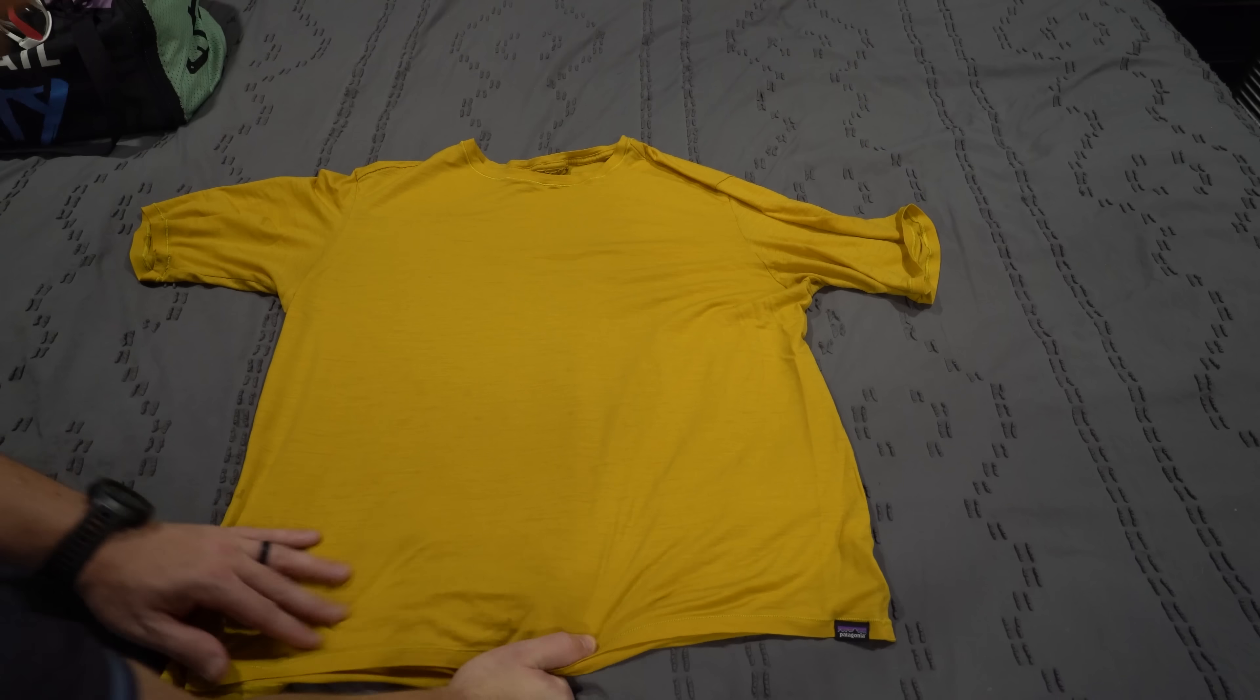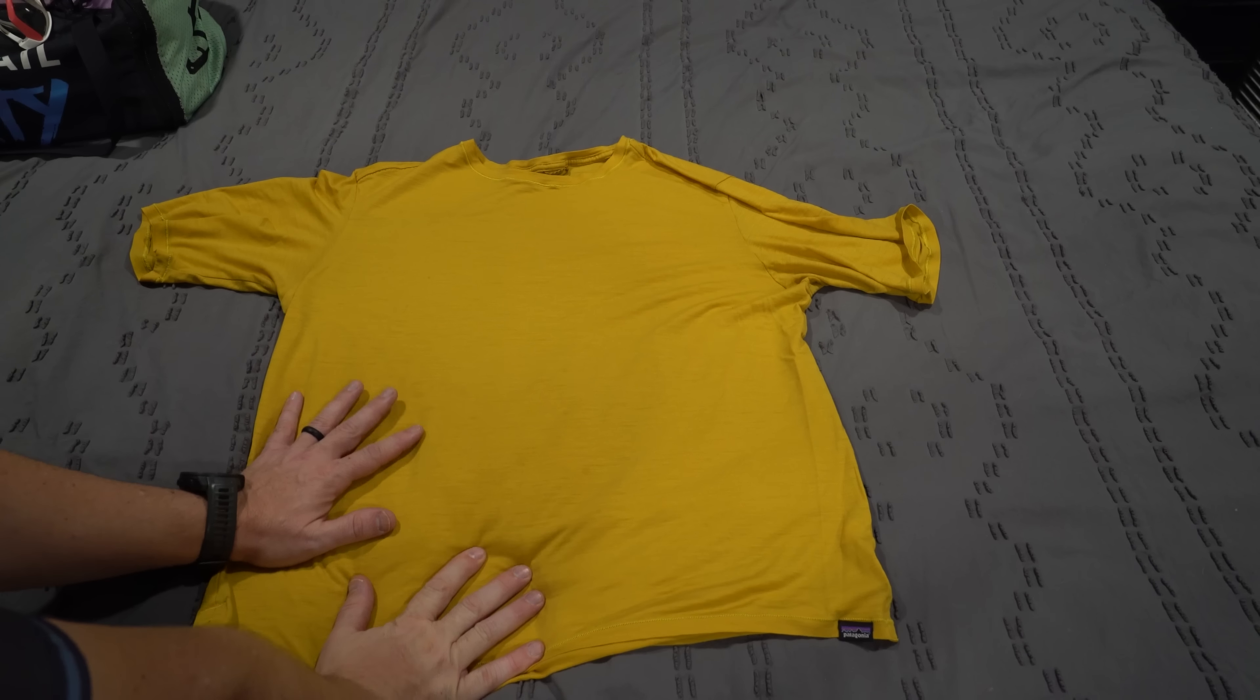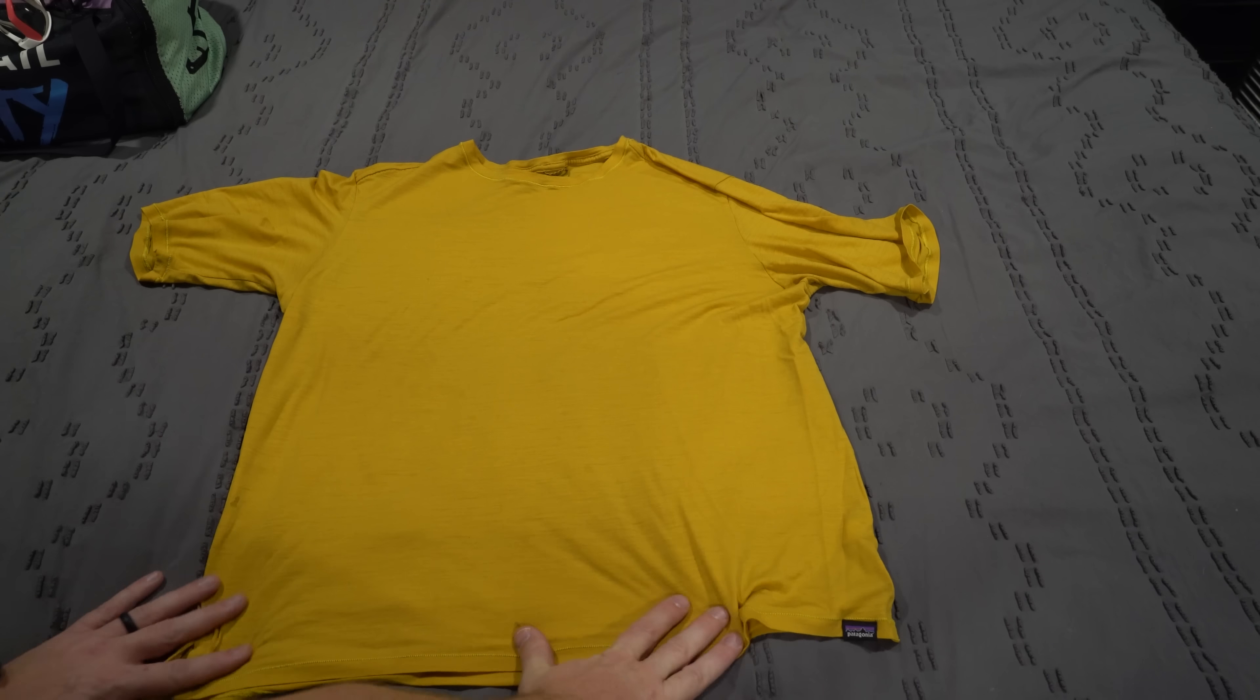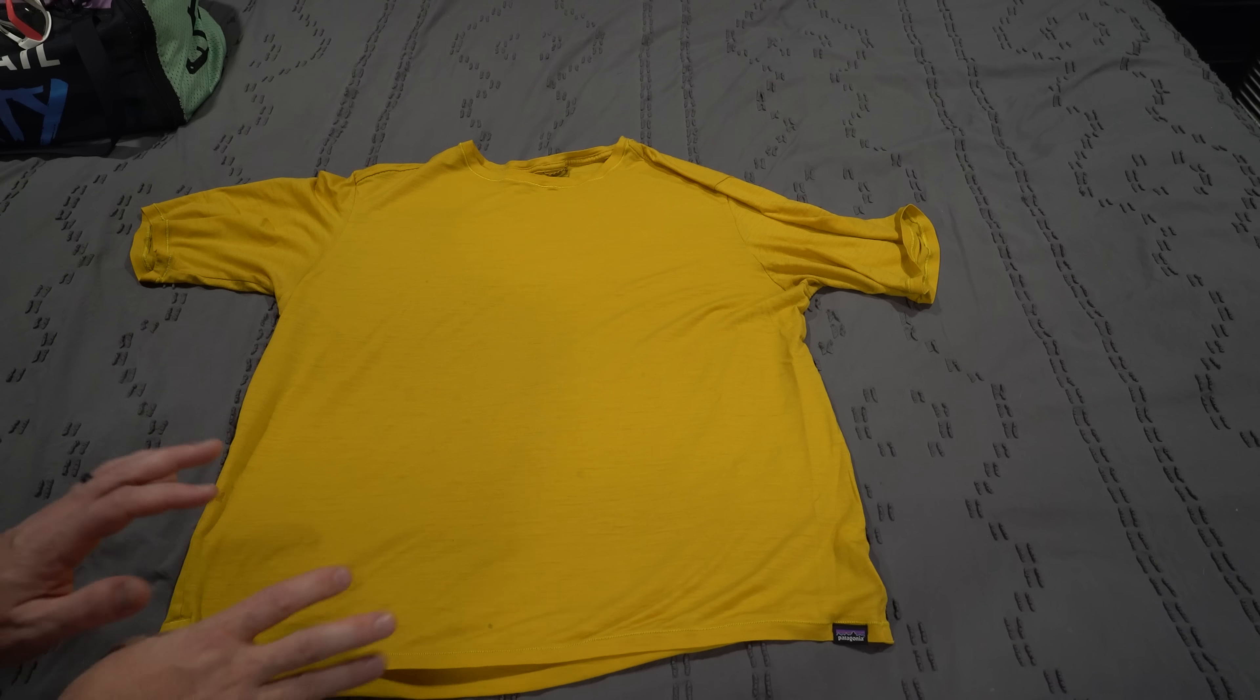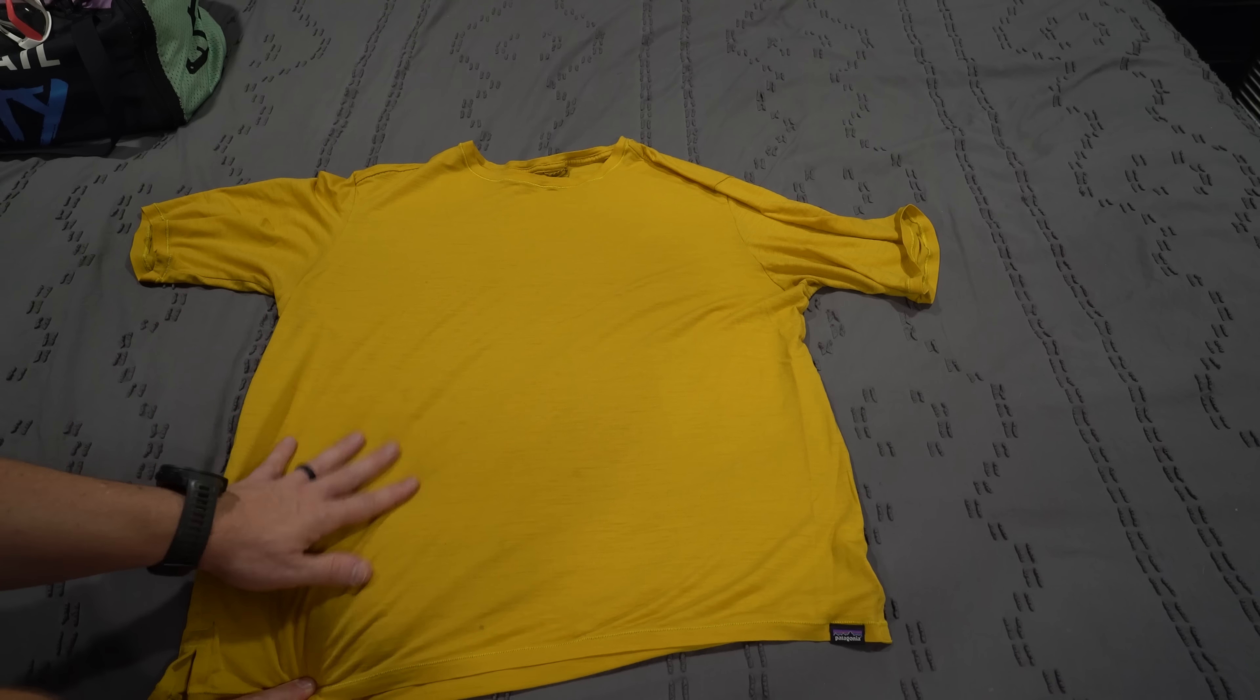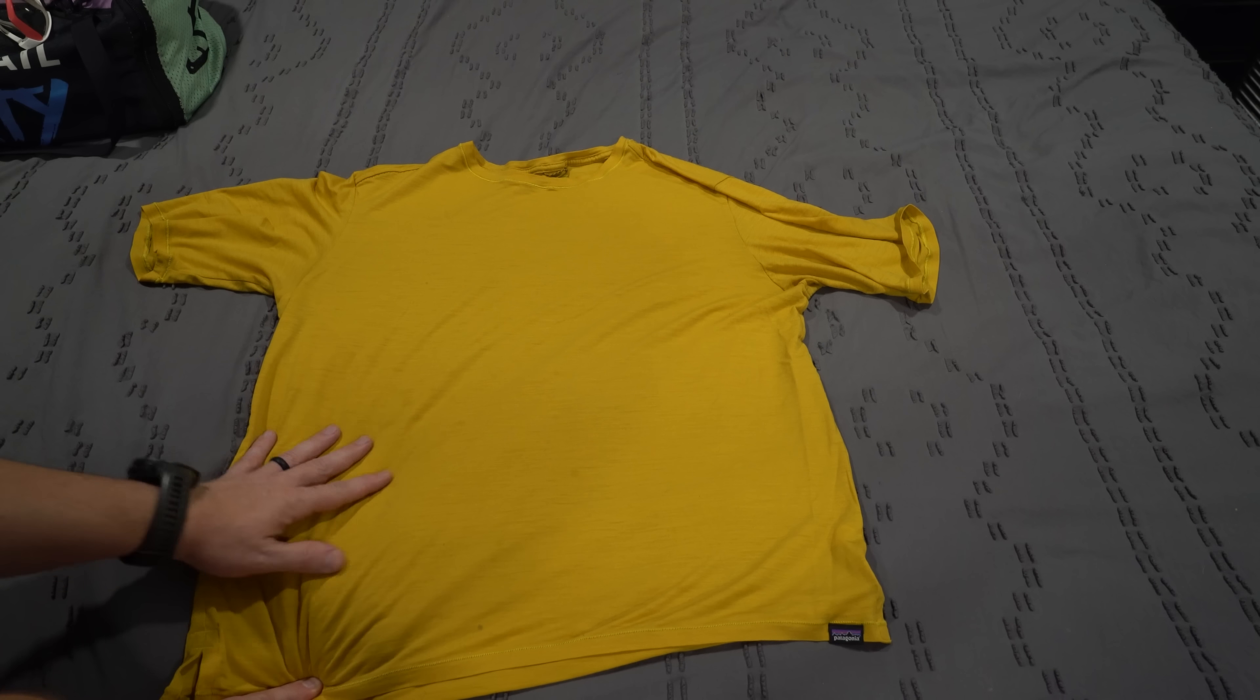Patagonia is starting to get into the mountain bike world, and this is the Patagonia Men's Merino Cycling Jersey. Basically, it's a Merino t-shirt, and Merino wool is awesome. It keeps you warm even when it gets wet. It wicks odor, and this is my go-to on bikepacking trips or anytime I'm layering and wearing a flannel or something warmer on top.